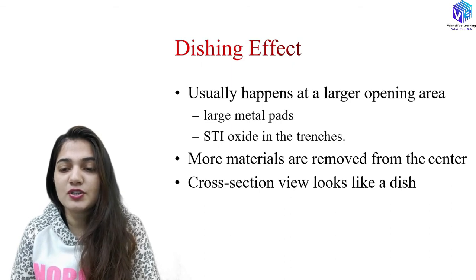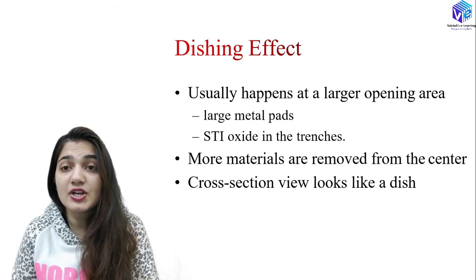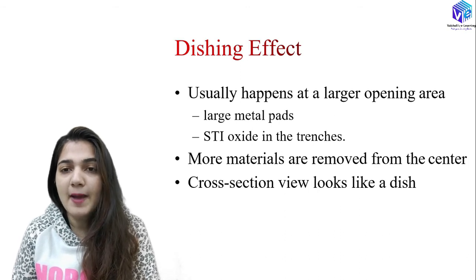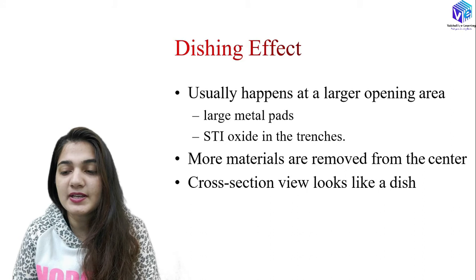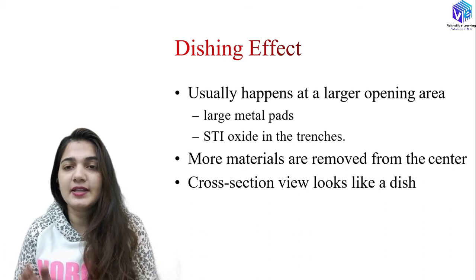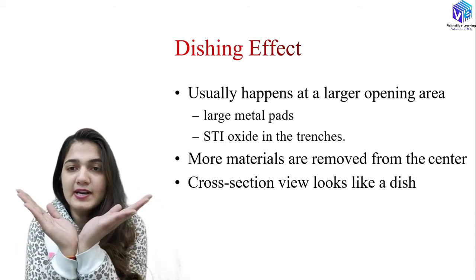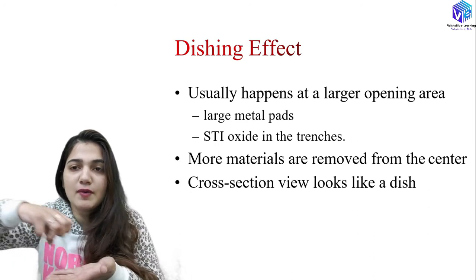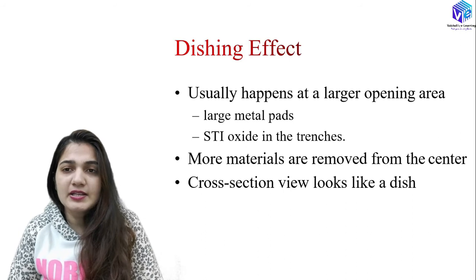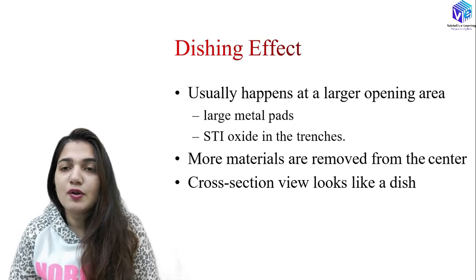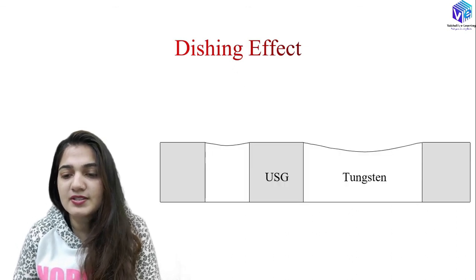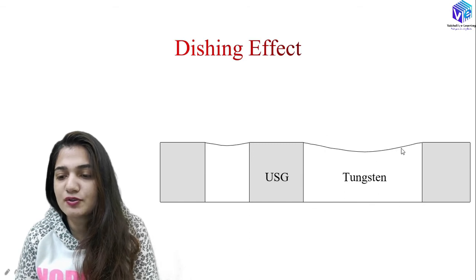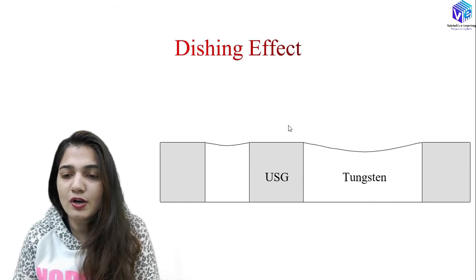Now the dishing effect. Dishing happens when there is a larger opening area of the wafer — also due to larger metal pads or shallow trench oxide in the trenches. If more material is removed from the center, the wafer looks like a dish — this is the dishing effect. The cross-section view looks like a dish.